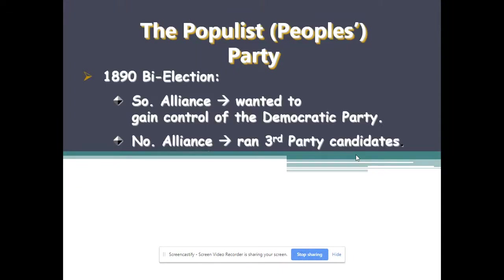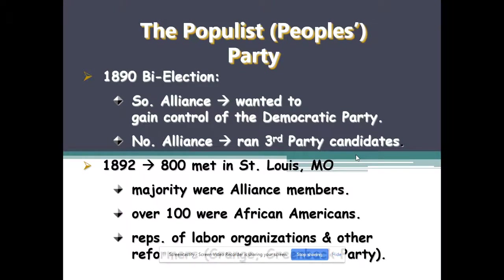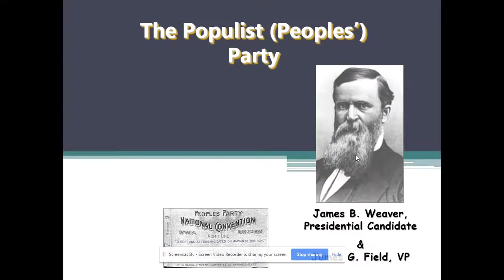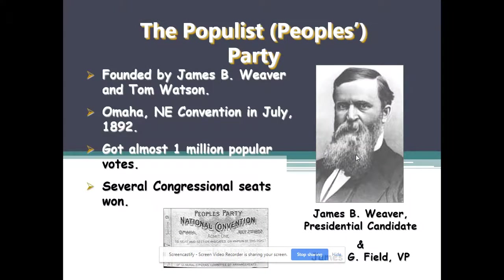Southern Populists wanted to take over the Democratic Party; Northern Populists wanted to run as a third party. In 1892, 800 met in St. Louis — and notably, unlike the Farmers' Alliance at the state level, the national Populist convention did admit African Americans. Some labor union members also joined. This is an anti-Populist political cartoon calling their platform 'the platform of lunacy.' Their first presidential candidate in 1892 was James B. Weaver, who got about a million popular votes. He didn't win, but they won congressional seats in the Great Plains states — which was significant.